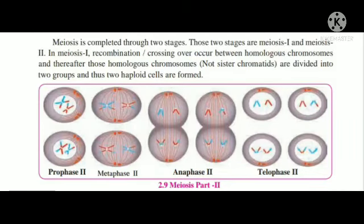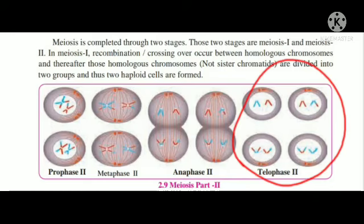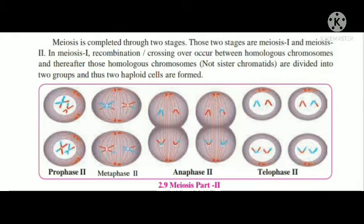This is part 2 — meiosis second, bhaag doan. In this, the cell division is similar to mitosis. The two haploid cells that were formed in part one now divide further. From them, four haploid cells are produced. Haploid cells — ek guni peshi — are formed.